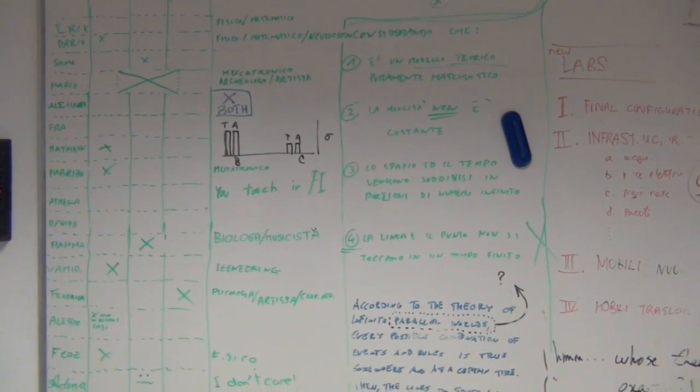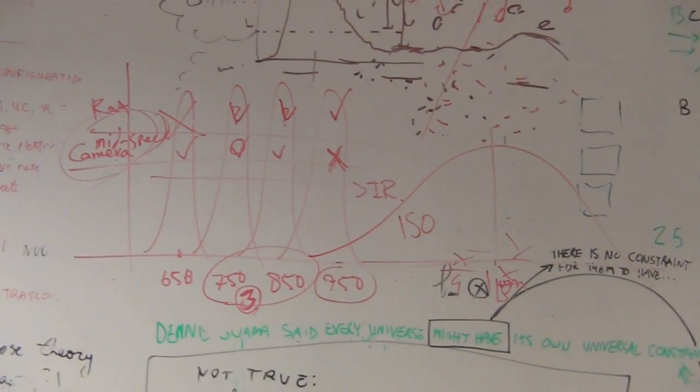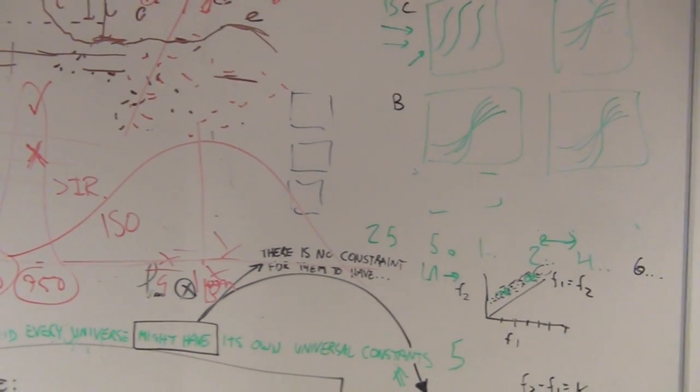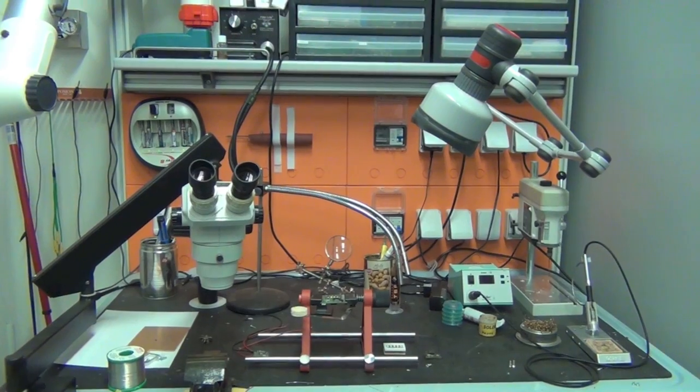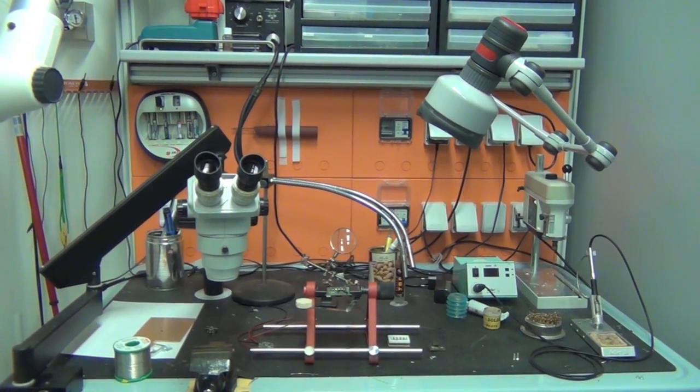In our experiments, rats have to solve some tasks. They receive tactile stimuli on their whiskers, and they have to make decisions based on the properties of this stimuli.